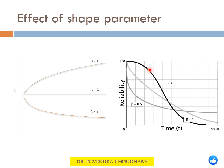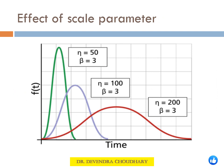As wear-out sets in, the reliability curve goes through an inflection point and thereafter reliability decreases sharply. Similarly, the scale parameter eta of Weibull distribution also has a significant impact on the failure function. If the scale parameter eta is increased while holding the shape parameter beta constant, the distribution gets stretched out to the right and its height decreases.